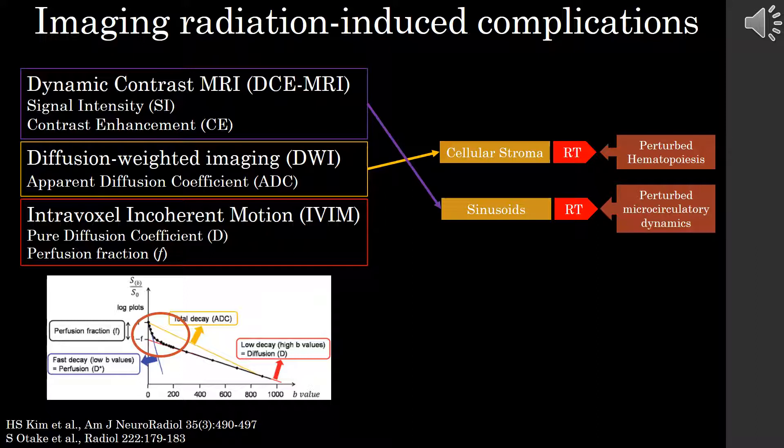Thus, IVIM produces three metrics: pure diffusion coefficient D, perfusion fraction F, and the pseudo-diffusion coefficient D*, though D* is not often included in analysis due to low SNR. We theorized that IVIM would allow us to simultaneously assess radiation-induced changes in the cellular stroma and sinusoids.